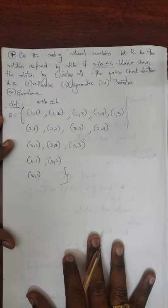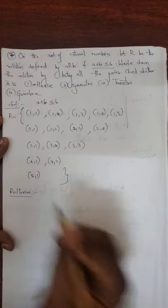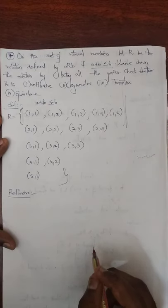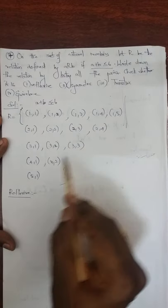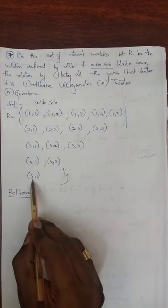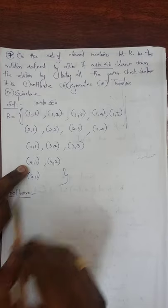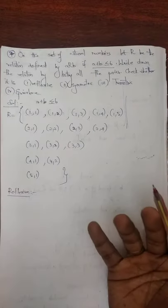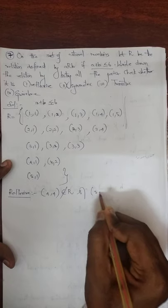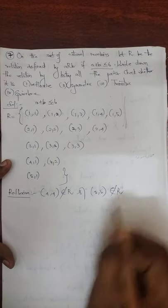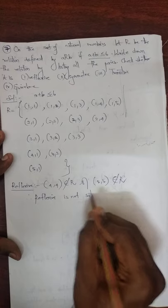Next, I want to check whether it is reflexive. For reflexivity, A relates A must hold for all elements. 1 comma 1 is present, 2 comma 2 is present, 3 comma 3 is present. But 4 is present in the relation, yet there is no 4 comma 4. And 5 is present, but there is no 5 comma 5. Since 4 comma 4 does not belong to R and 5 comma 5 does not belong to R, reflexive is not satisfied.